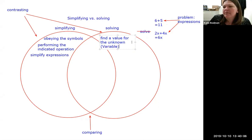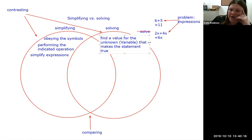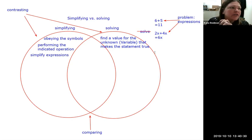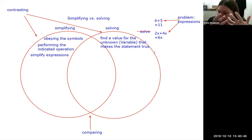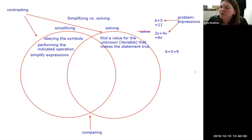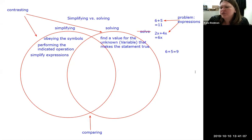A statement has to make a claim — something you could prove true or false. Six plus five is not a statement; it's just a thing floating out there like saying 'dog.' But if I write six plus five equals nine, now I've stated something. You could determine if it's true or false. Is it true, Nicole? False. That is a statement.